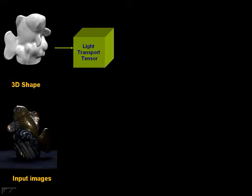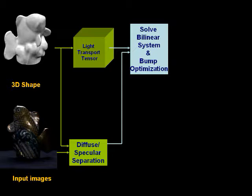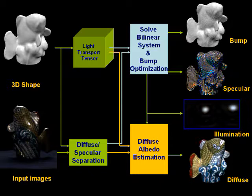Here's an overview of our algorithm. From the 3D shape, we compute the light transport tensor of the diffuse and specular material. The diffuse and specular colors are also separated. By solving a bilinear system and performing bump optimization on the specular color, we can obtain bumps, specular albedo, and illumination map. The illumination is then used to solve for the diffuse albedo map.